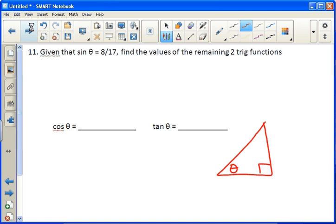sine has to be 8 over 17. Well if this is the adjacent side, and this is the opposite side, and this is the hypotenuse, we know that sine is opposite over hypotenuse. So that means our opposite is 8, and our hypotenuse is 17.